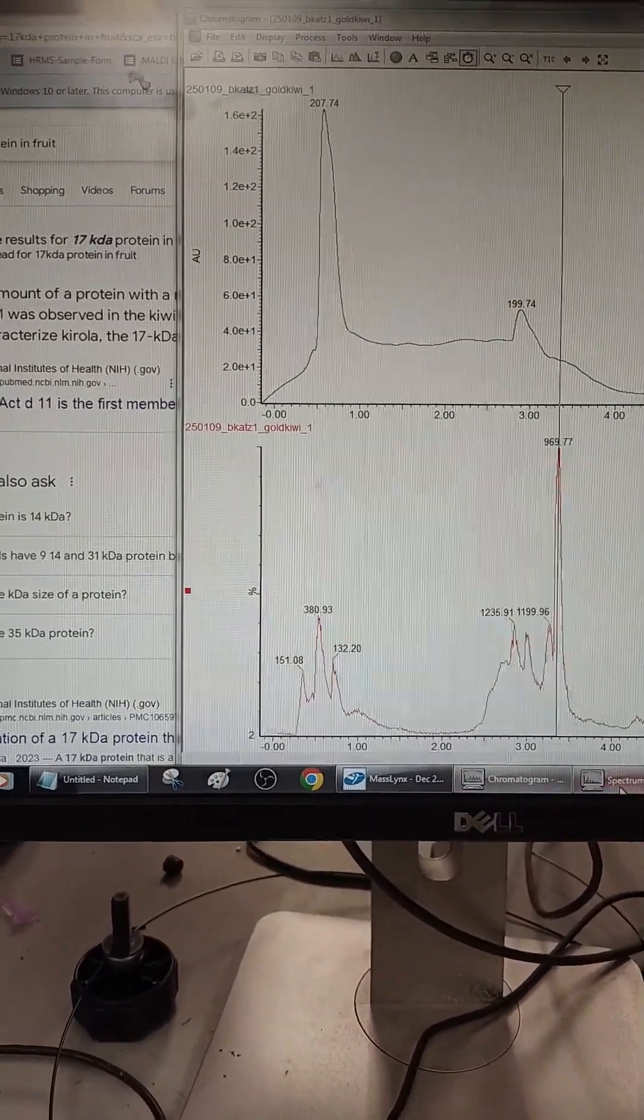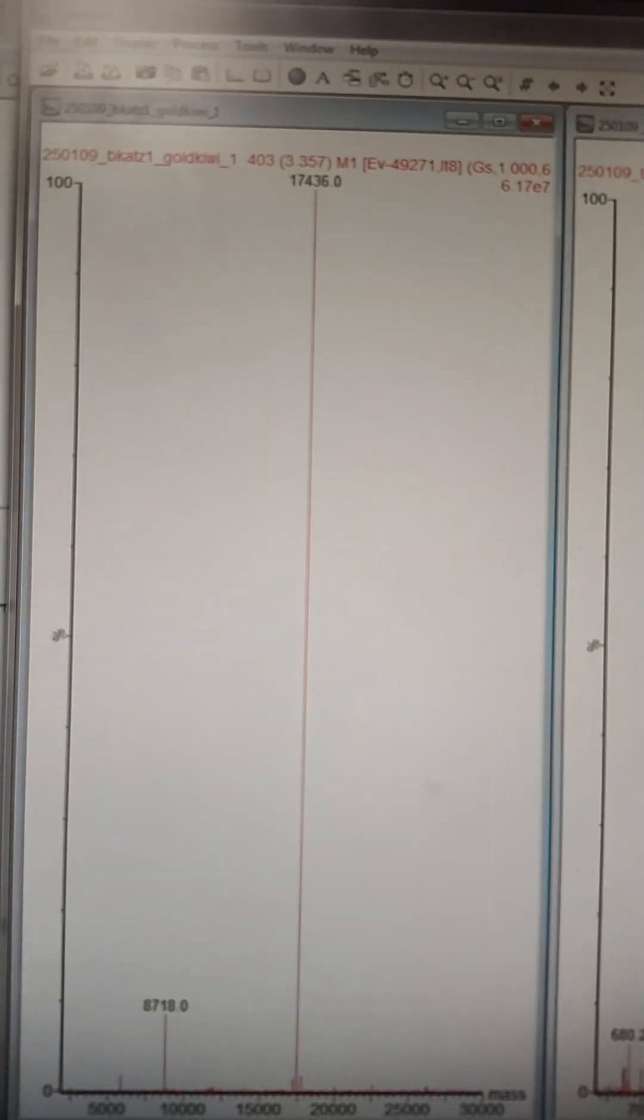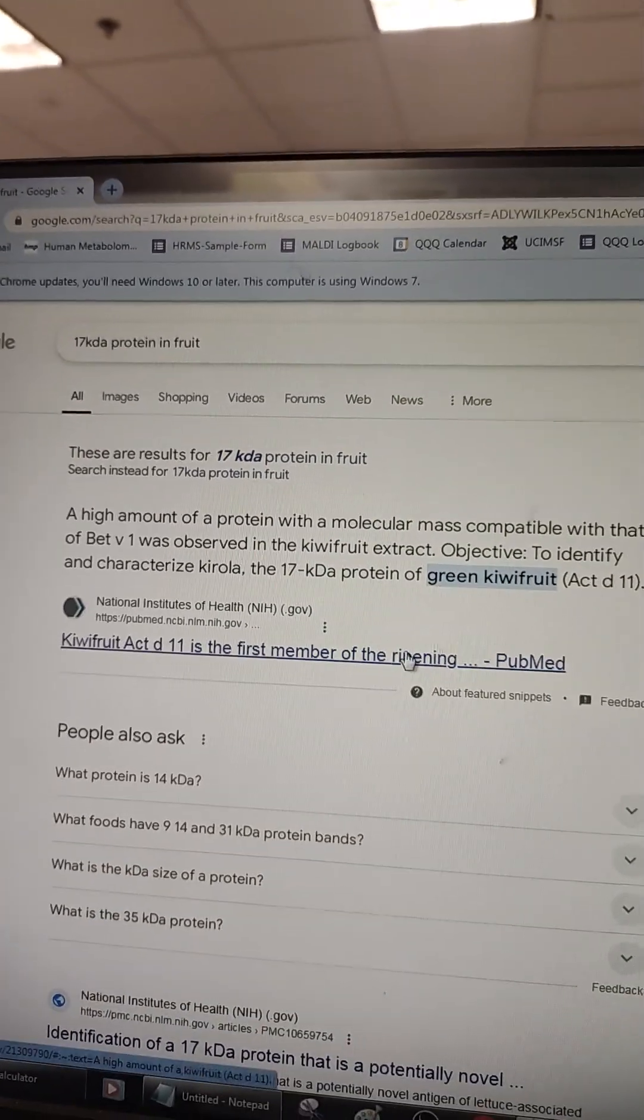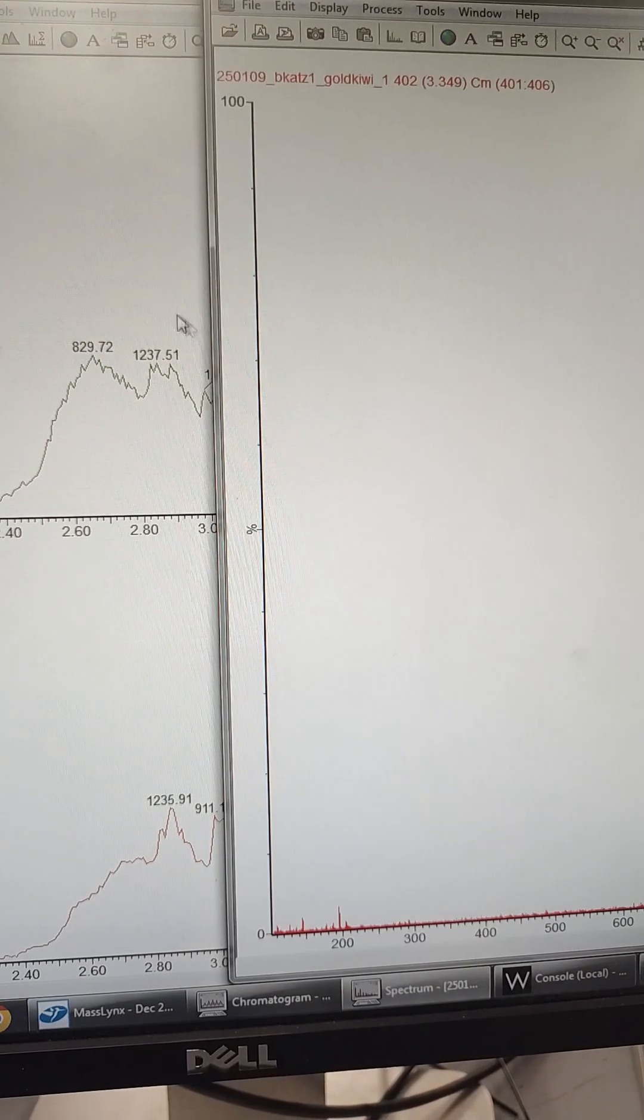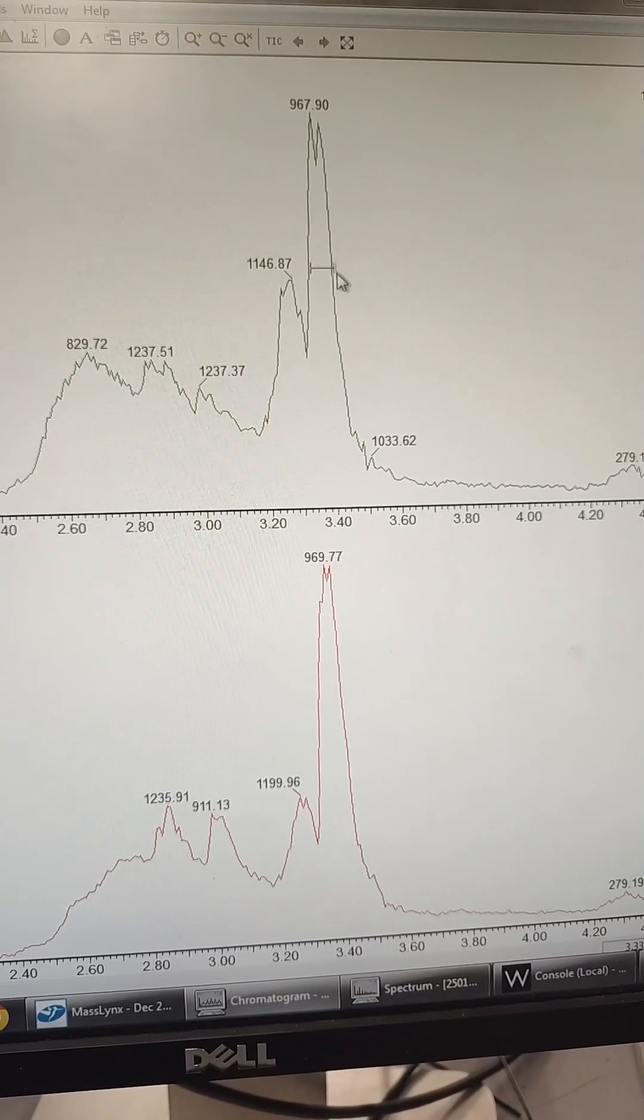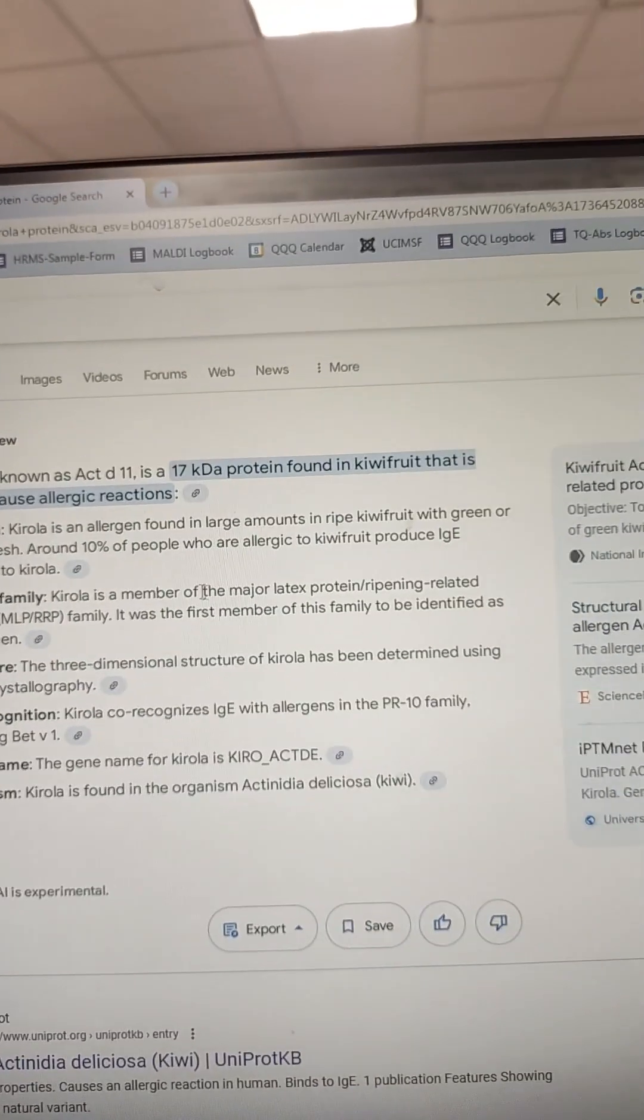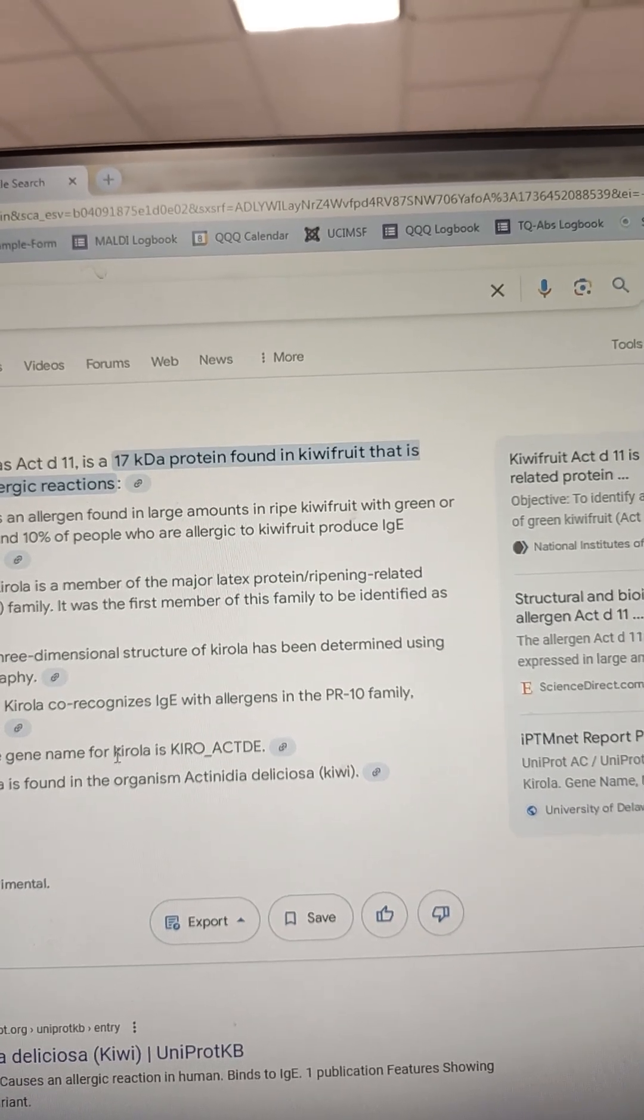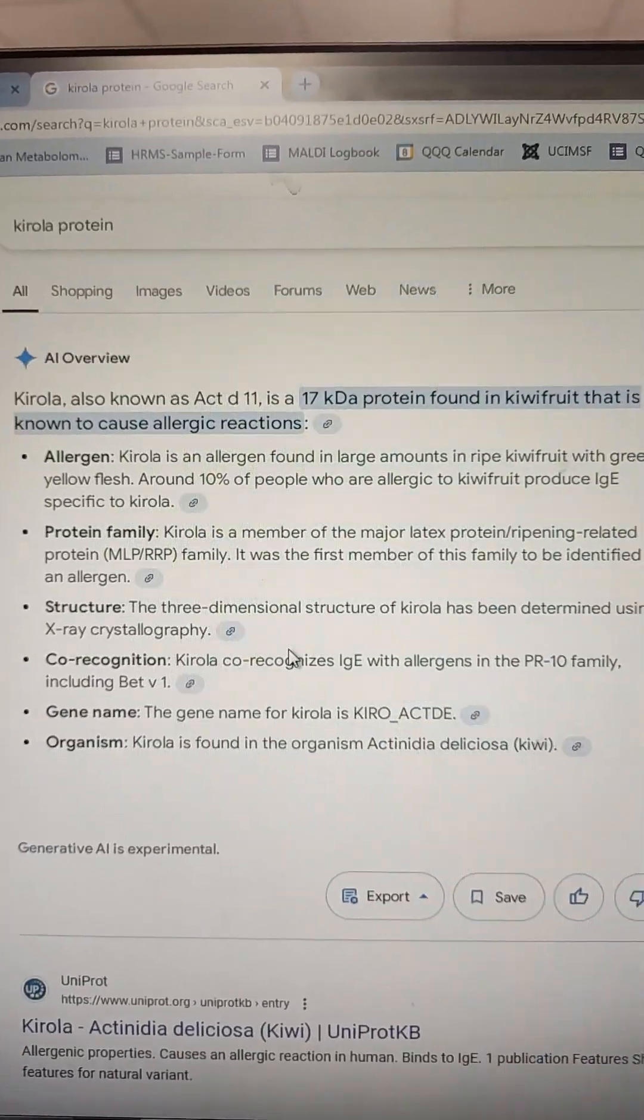I ran a kiwi and then I got a protein signal. And then I just broadly deconvolved it and got a mass at 17k. And then I searched 17k kiwi allergen protein and fruit. And the first thing that pops up is kiwi fruit. Come on. There's no way I'm that good. Is that protein charge state series of that 17k allergen protein called Kirola, which is a ripening protein. It is a major latex ripening protein.